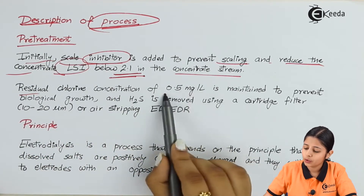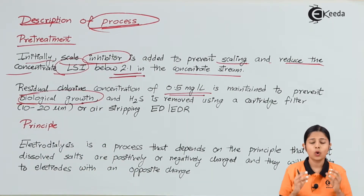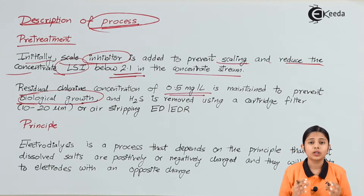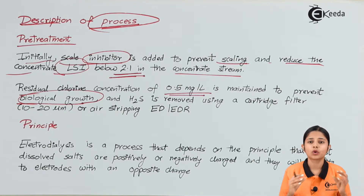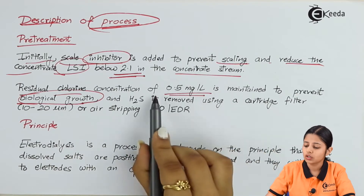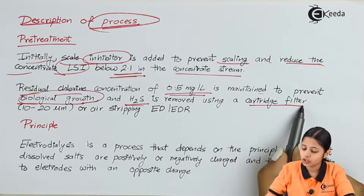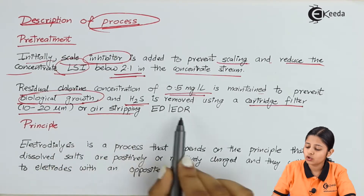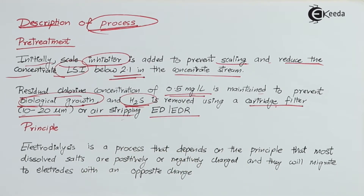A residual chlorine concentration of 0.5 mg per litre is maintained to prevent biological growth. Microbes, bacteria, and certain viruses grow in water because water (H2O) contains oxygen, which supports microbial growth. By maintaining chlorine at 0.5 mg per litre, biological growth is suppressed. Additionally, dissolved hydrogen sulphide (H2S) is removed using a cartridge filter of 10 to 20 µm, or by air stripping in ED or EDR processes.